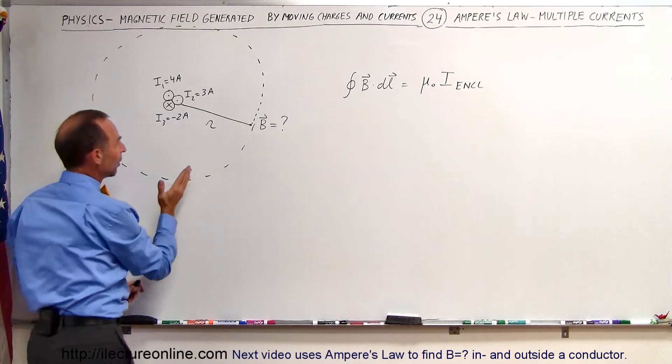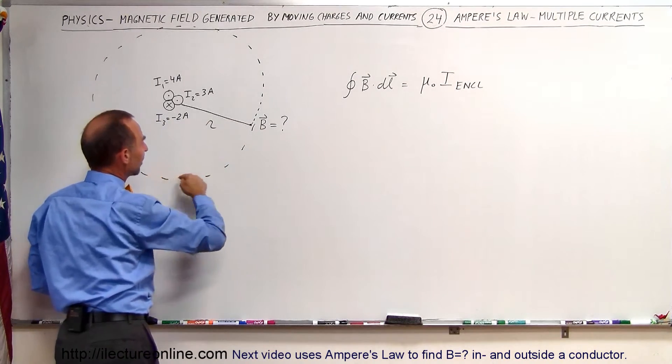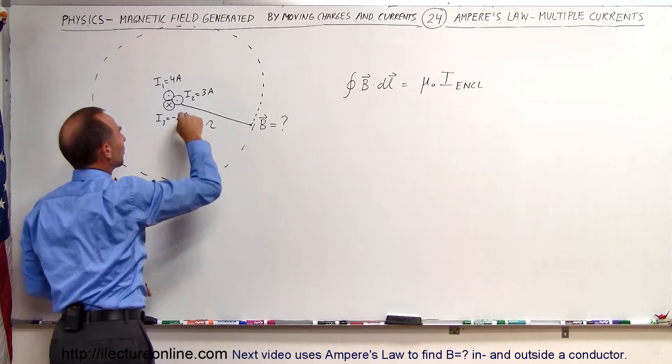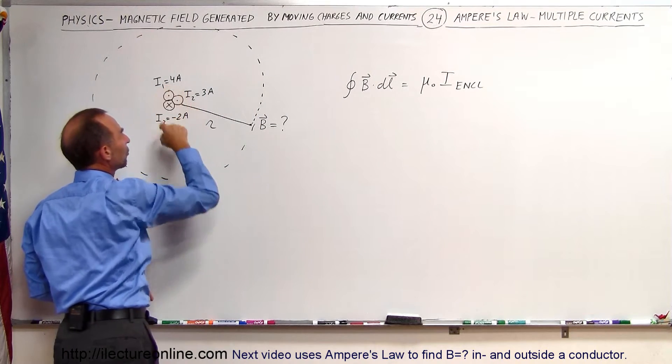So notice that the way it works is that this circle right here is equal distance away from the three currents all the way around.